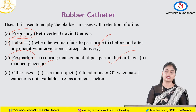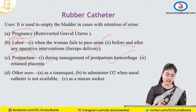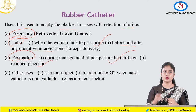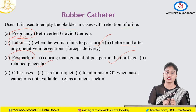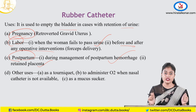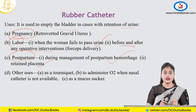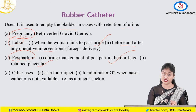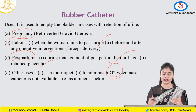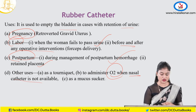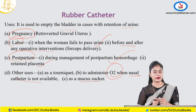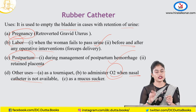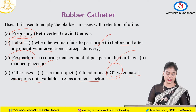Other uses of the rubber catheter include using it as a tourniquet — for example in myomectomy, to tie the uterine arteries. You can also use it as a nasal catheter when nasal oxygen administration equipment is unavailable, or as a mucus sucker by connecting one end to a suction apparatus. However, these uses are generally not preferred.